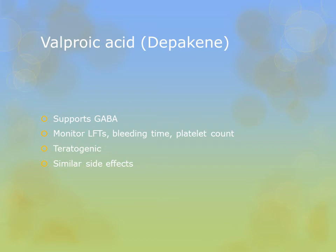Valproic acid seems to work by supporting GABA, the inhibitory neurotransmitter. We need baseline liver function tests, bleeding time, and platelet count because these can be affected by valproic acid. It is teratogenic and should not be used in pregnancy. Similar side effects of sedation, drowsiness, and dizziness apply, and for most anticonvulsants these common side effects typically diminish over time.